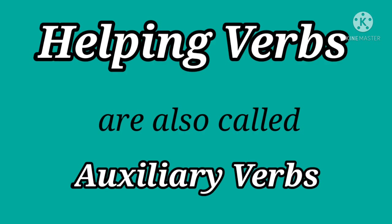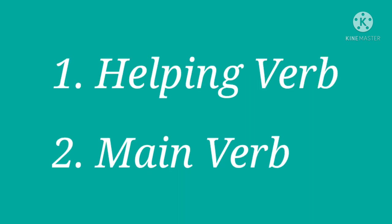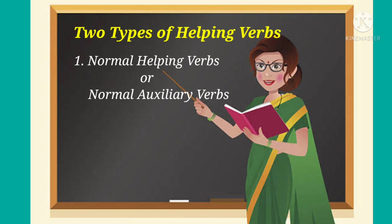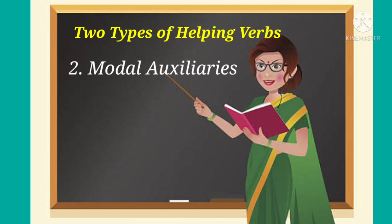Helping verbs are also called auxiliary verbs. We understood that some helping verbs perform two functions according to usage — as a helping verb as well as a main verb. You should also notice that helping verbs are of two types. Some are flexible, having two functions; they are called normal auxiliary verbs. Whereas some are rigid in their nature and remain as helping verbs only — such are called modal auxiliaries.